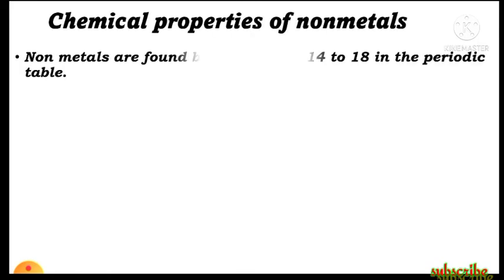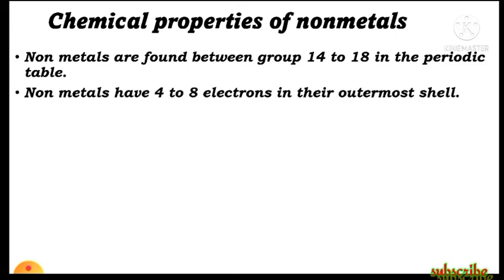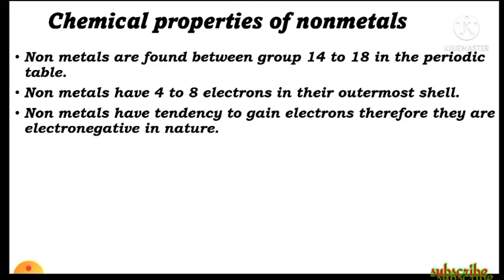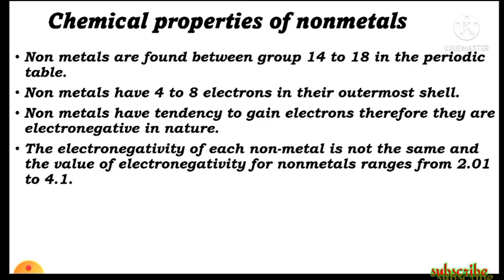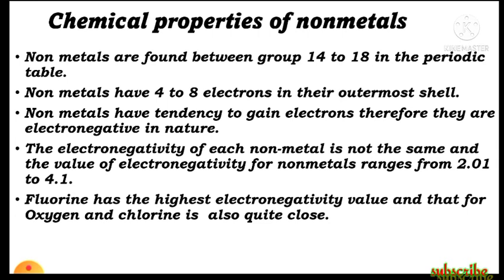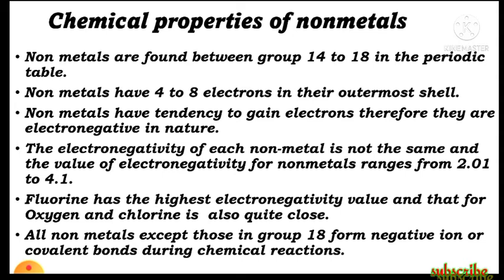Now the last topic — chemical properties of nonmetals. Nonmetals are found in groups 14 to 18 in the periodic table. They have four to eight electrons in their outermost orbit and have a tendency to gain electrons, therefore they are electronegative in nature. The electronegativity of nonmetals ranges from 2.01 to 4.1. Fluorine has the highest electronegativity value; oxygen and chlorine have close values. All nonmetals except those in group 18 form negative ions and covalent bonds during chemical reactions.